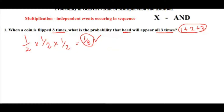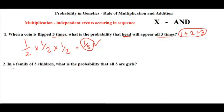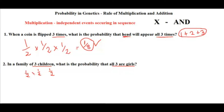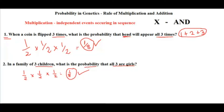Let's move to the second problem, which is similar but on the genetics side. In a family of three children, what is the probability that all three are girls? The probability of the first child being a girl is one by two, the second birth also one by two, and the third birth also one by two. Multiply all the probabilities and you get one by eight — that is the probability that all three are girls.